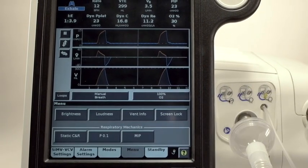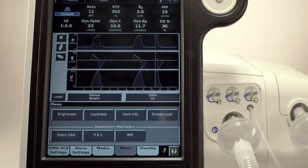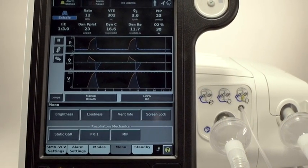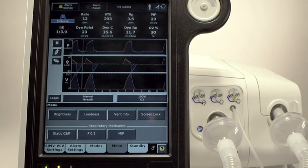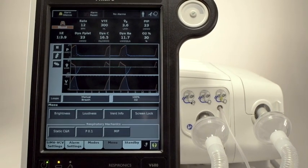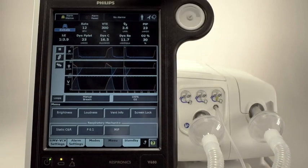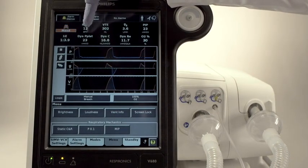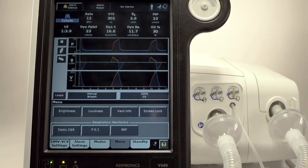In the beginning of the overview, we touched on V680's ability to provide dynamic plateau pressure values that approximate static plateau pressure measurements. Let's explore that now. First, observe the breath-by-breath dynamic plateau pressure displayed in the patient data section. Note the value. Next, select Static CNR.